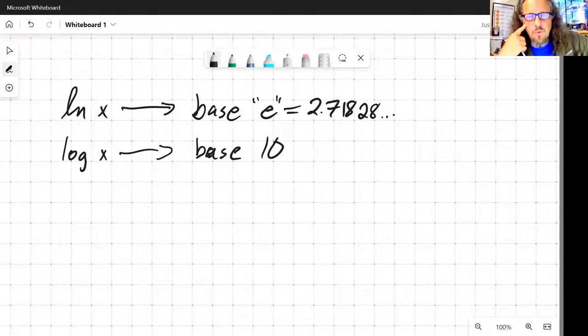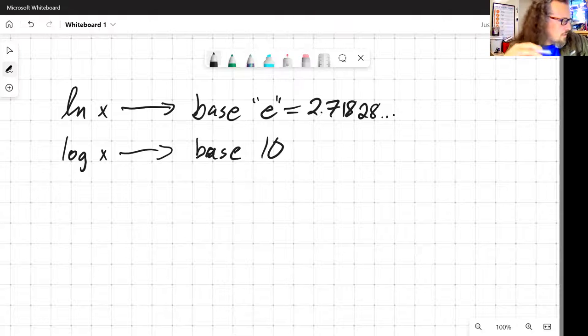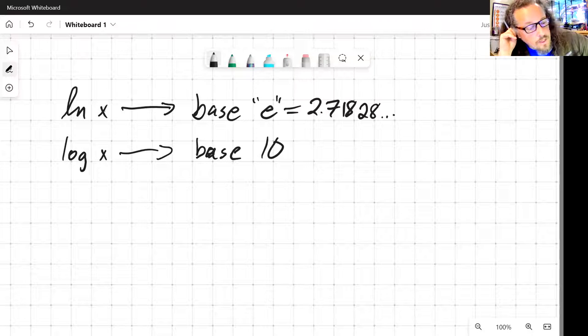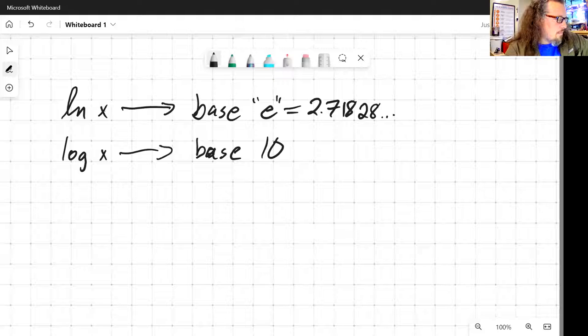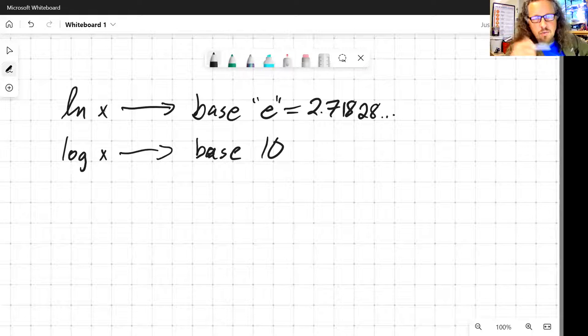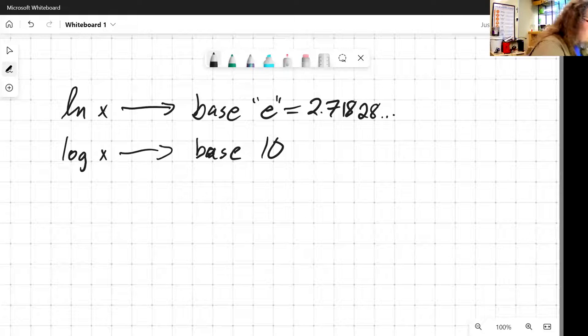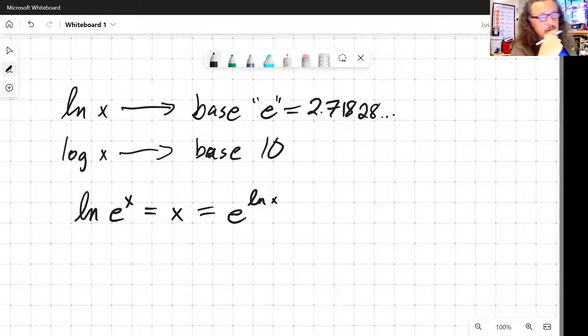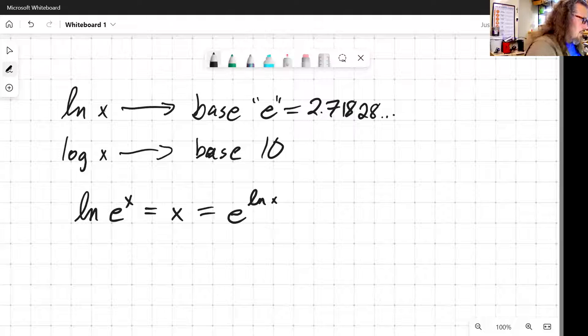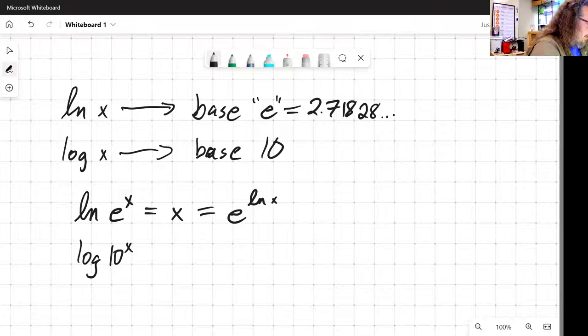Common logs are base 10. So that's really the only difference between a natural log and a common log. A natural log uses 2.71828 as its base, common log uses 10 as its base. So what does that mean? Well, that means if we're looking at getting rid of a logarithm term, let's look at the inverses. Natural log of e to the x is equal to x, and similarly e to the natural log of x is x.